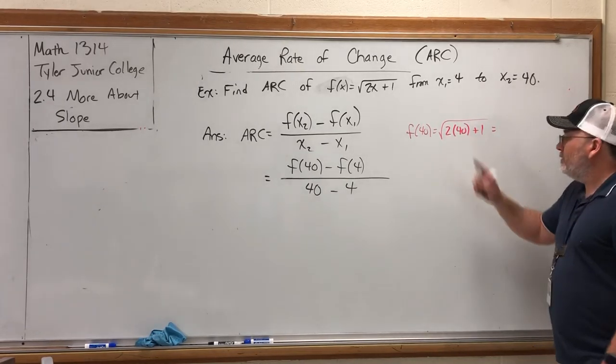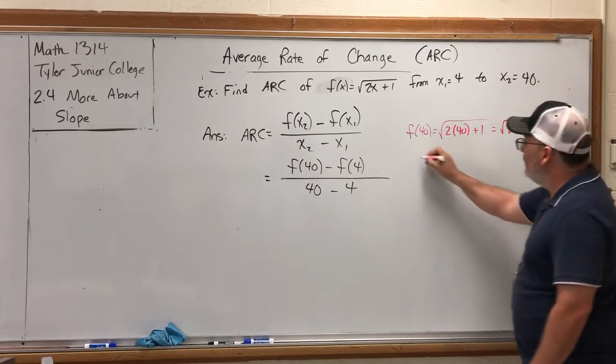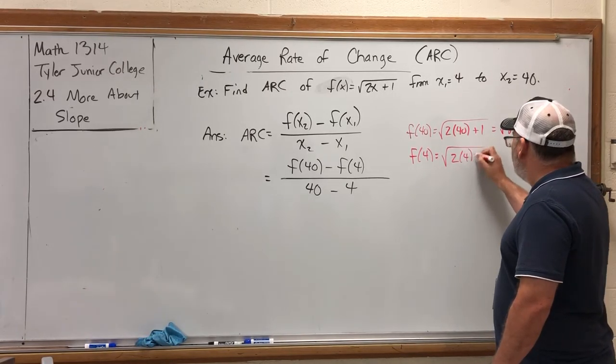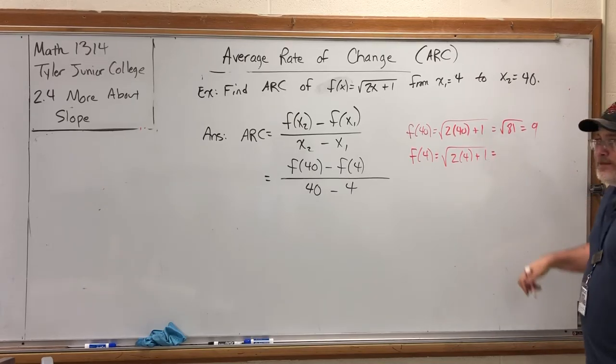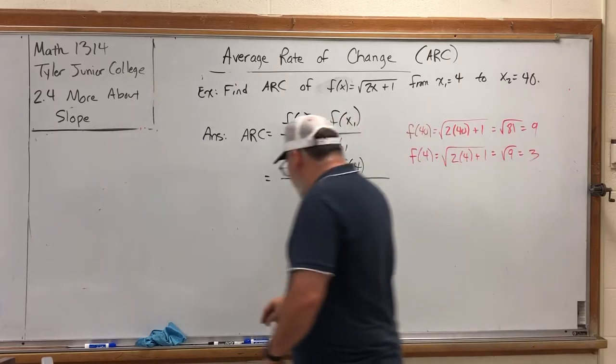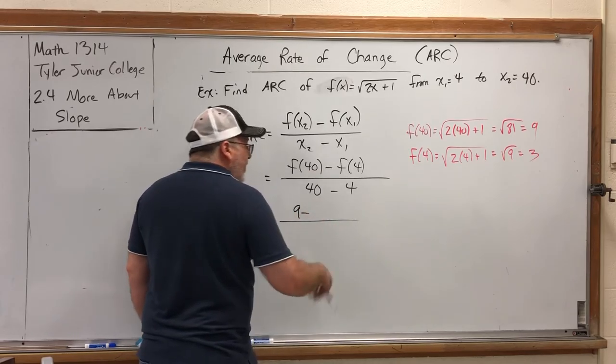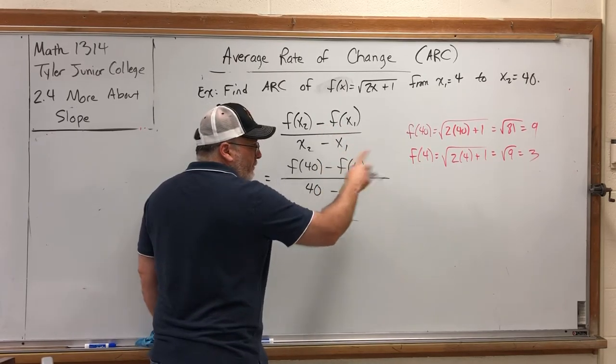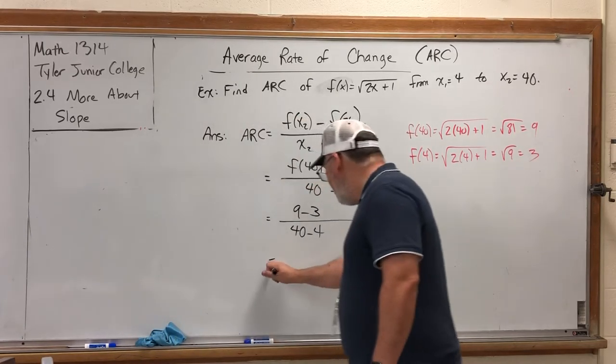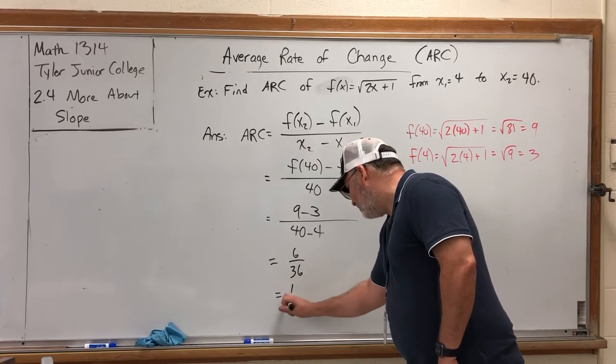If we substitute 40 into the function, we get √(2×40+1). If we substitute 4, we get √(2×4+1). 2 times 4 is 8, 8 plus 1 is 9, we get √9 which is 3. So the second y-coordinate was f(40) which was 9. The first y-coordinate was f(4) which was 3. In the denominator, we still have 40 minus 4.